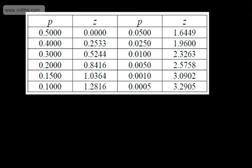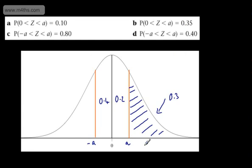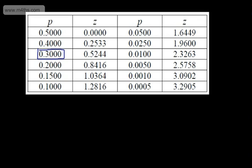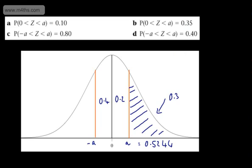So let's look it up, and 0.3 is just here. That gives me my probability — what we could say is that's 30%. So A = 0.5244. There we go, all done. Using the percentage points table to find the value of A given a probability.